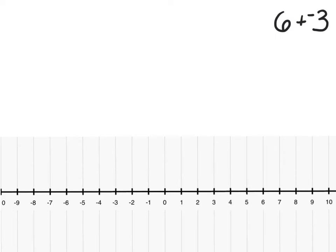Now we can start using two sides of integer coins. I can still model positive 6, and now I'm going to model negative 3 and still combine. There's a prerequisite skill here: I need to understand zero pairs before modeling with integer coins — that when we have one positive and one negative, they cancel each other out. I can think of having a debt and repaying that debt. I model those zero pairs by crossing one out: there's one zero pair, another, another. As I combine them, those debts are canceling each other out, and I'm left with positive 3.